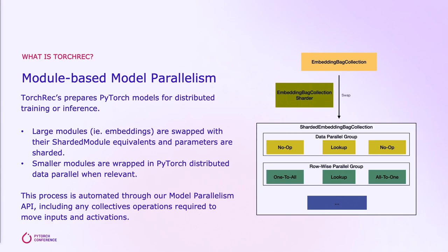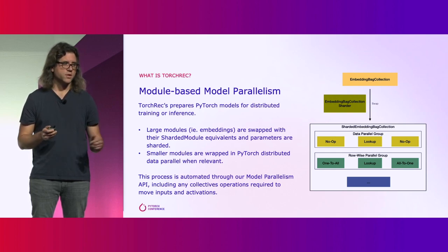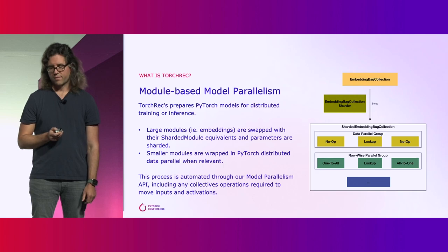That first communication lookup is going to communicate the input data to the shard, and then the output of the embedding will be placed back onto the local device. Also, due to our novel use of awaitables, we're able to have multiple sharding techniques per module to optimize based on your sparse input data. For the rest of your model, we typically wrap that in distributed data parallel so we're ready for your distributed training environment.